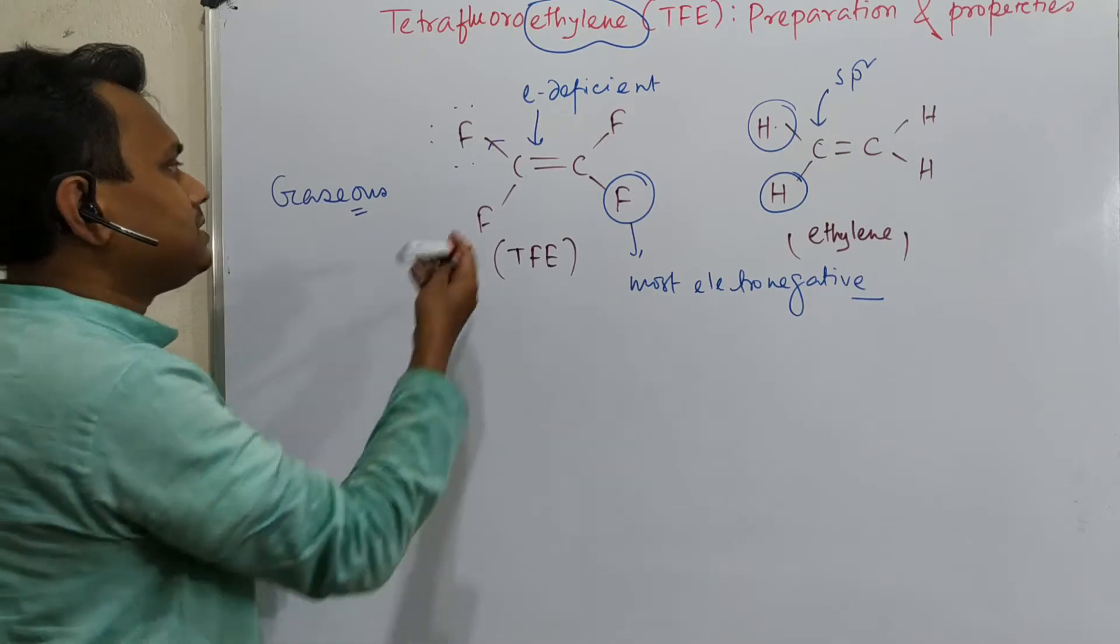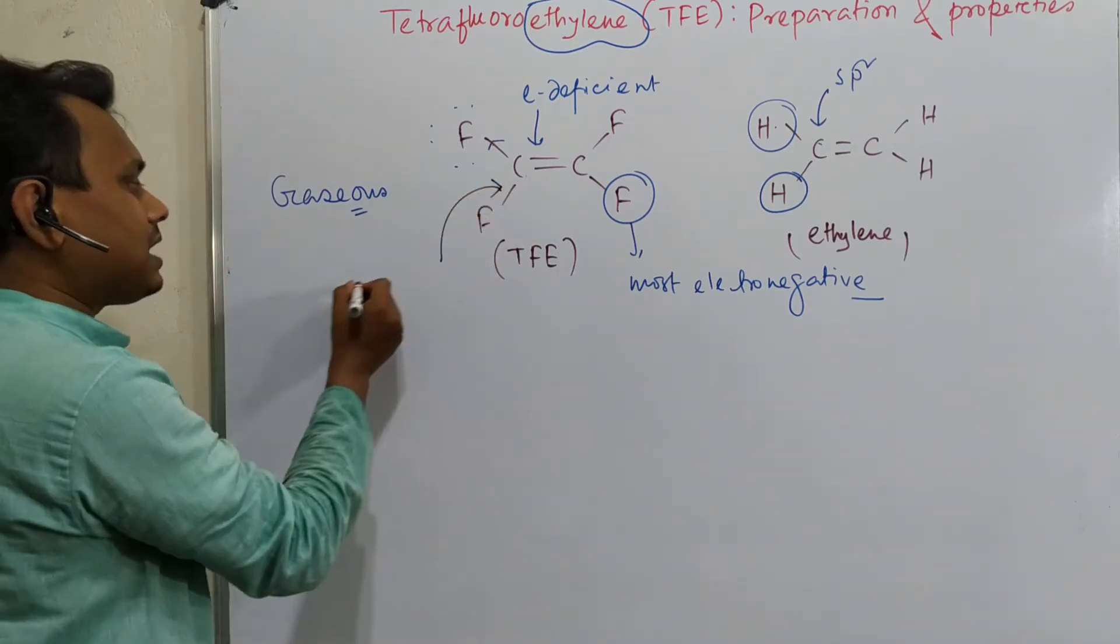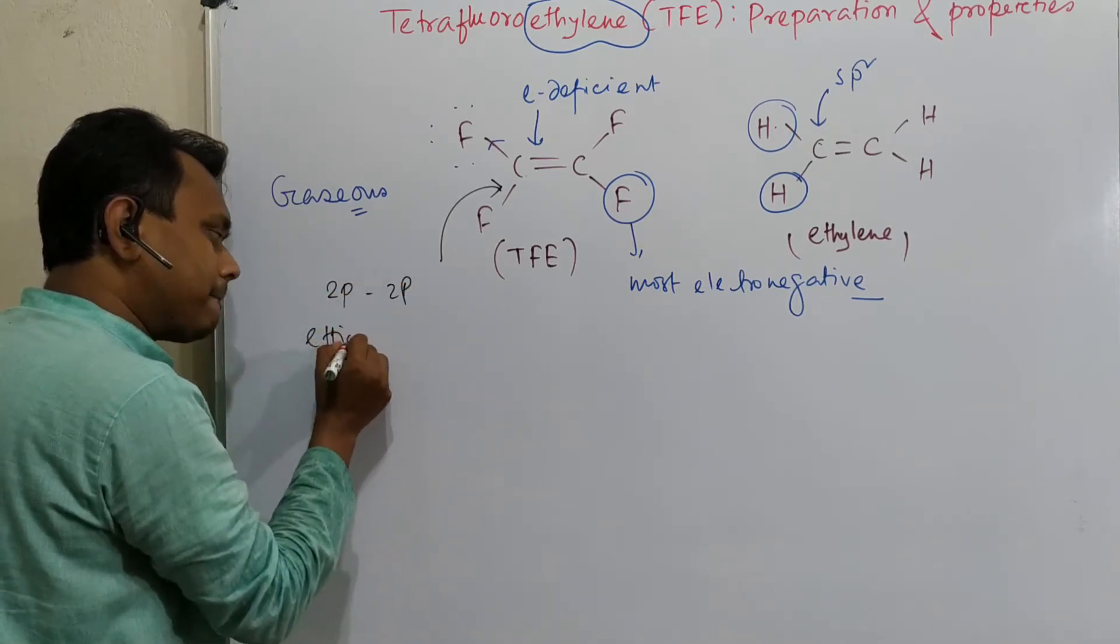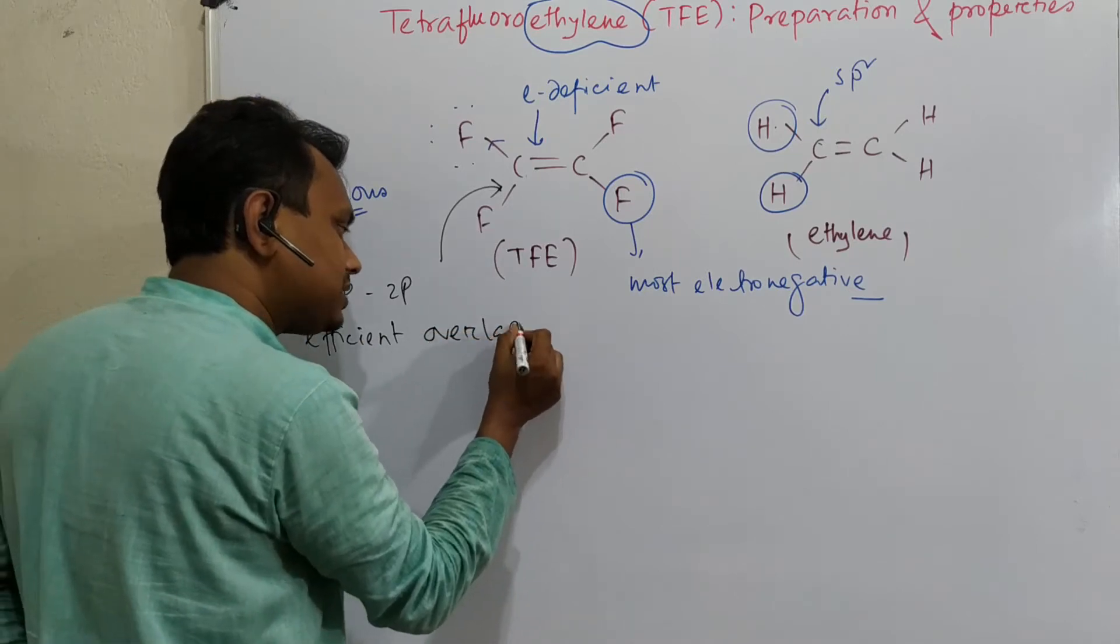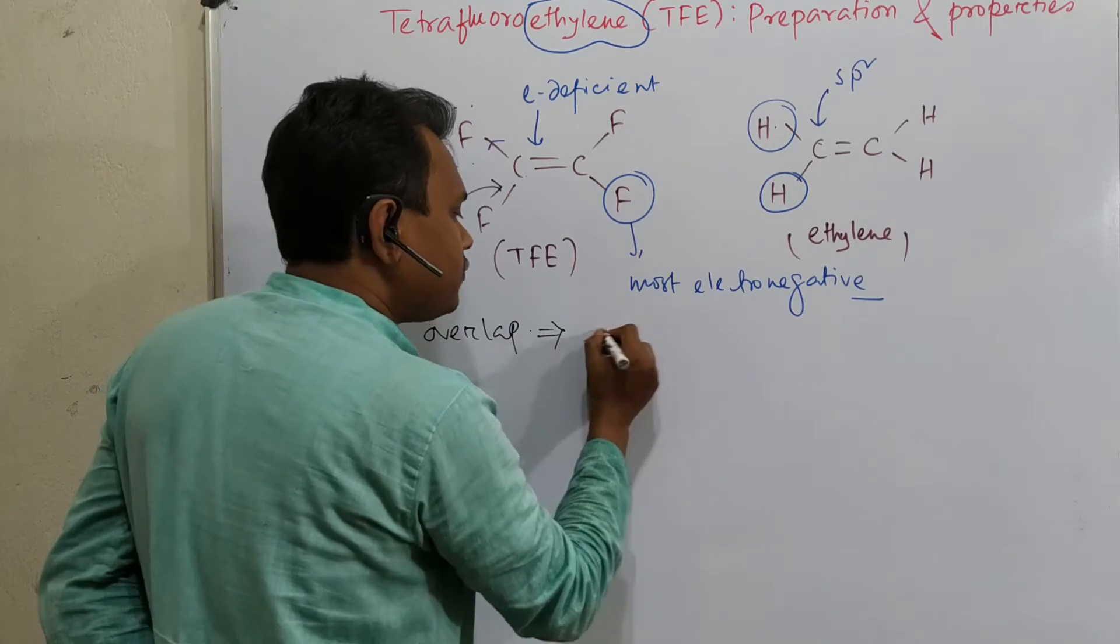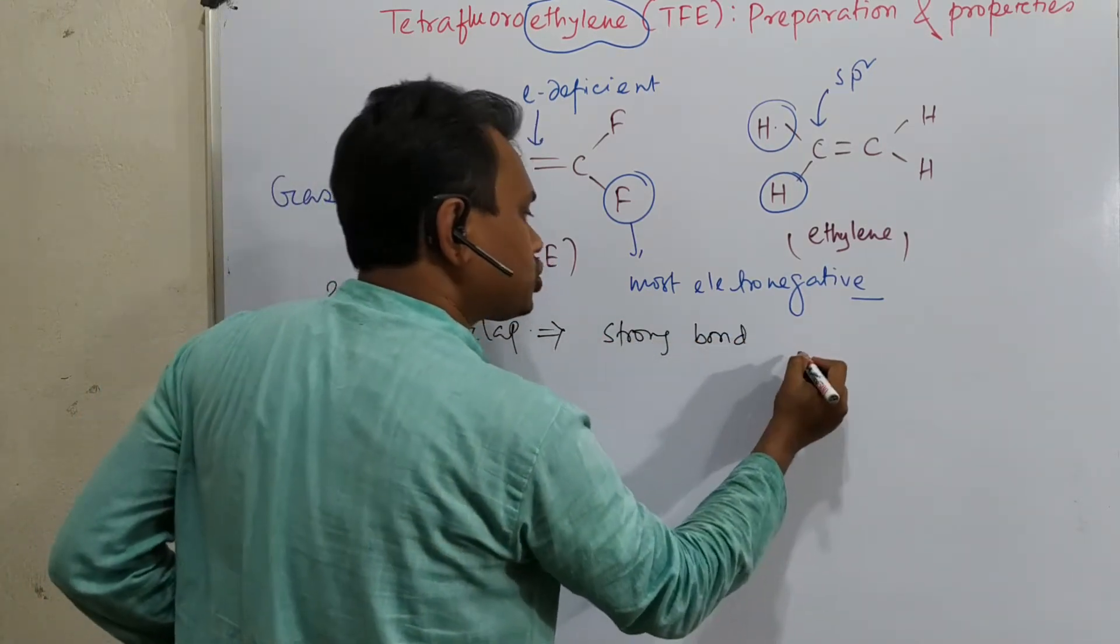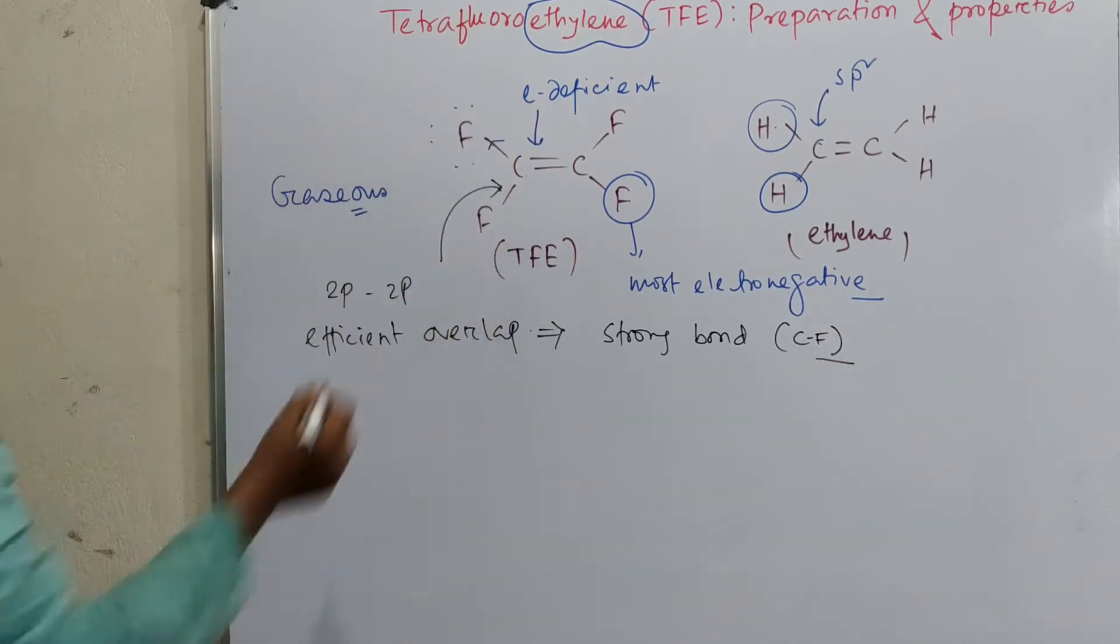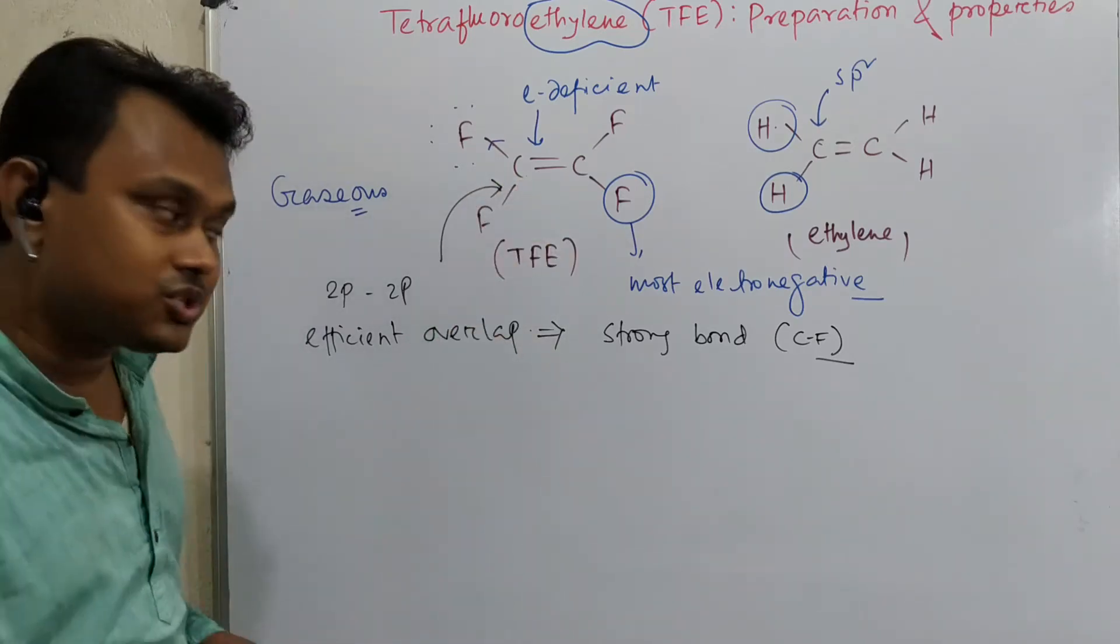The unique thing is that this carbon-fluorine bond—actually both are second row elements, that is 2p-2p, so efficient overlap. So efficient overlap of atomic orbitals. Consequently what happens, this results in a very strong bond. This C-F bond is very strong. That's why that is the uniqueness of this carbon-fluorine chemistry.